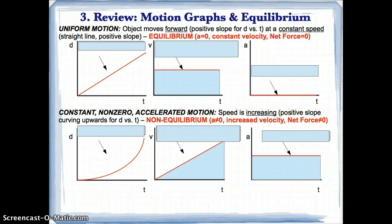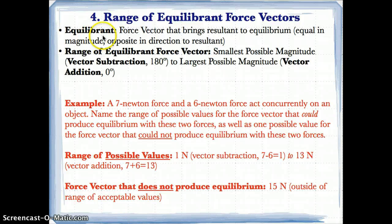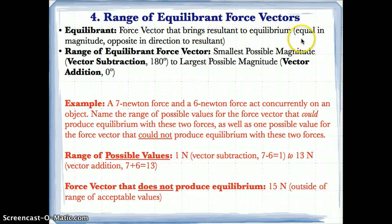Now let's talk about the range of equilibrium force factors. As you increase the angle, you decrease the magnitude of the equilibrium force factor. The equilibrant is a force that brings the resultant to equilibrium — it's equal in magnitude but opposite in direction to the resultant. For example, if the resultant is five newtons southeast, the equilibrant would be five newtons northwest.